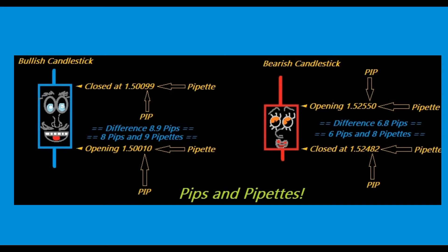Let's take a look at this very artistic illustration which I put together for you. So what do we see here? First, to the left we got this happy looking bullish candlestick. As you can see it opened at 1.50010. So the 1 represents the pip and the pipette is the 0, the last decimal.